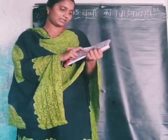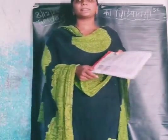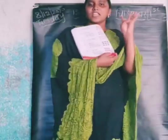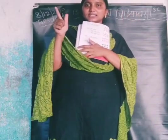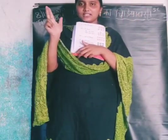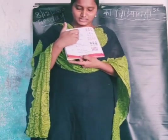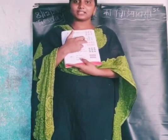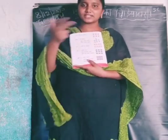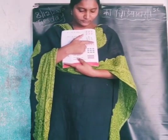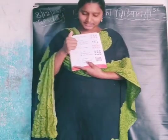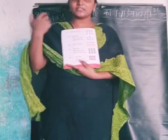Number 8. Rani ki billi — Rani's cat. Count with me: 1, 2, 3, 4, 5, 6, 7, 8. 8 cats are there. This is Rani — Rani ki billi.